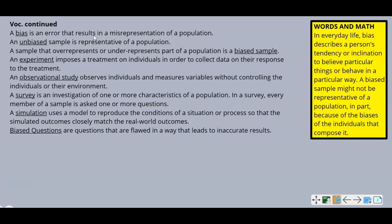A simulation uses a model to reproduce the conditions of a situation or process so that the simulation outcomes closely match the real-world outcomes. And the last one: biased questions are questions that are flawed in a way that leads to inaccurate results.